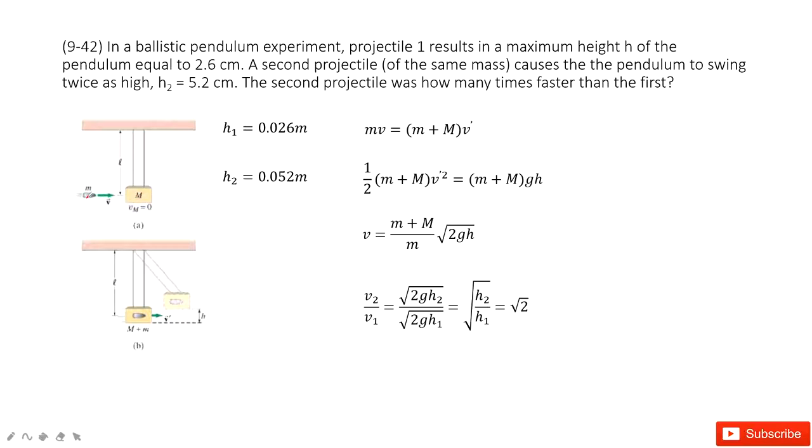We have a bullet, and then the bullet just hits this object. This object is connected with the pendulum. And finally, the bullet just inside this box, and these two move up. So this is how it happens.